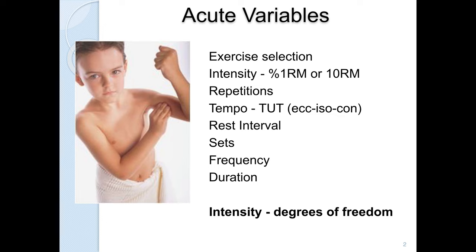The next acute variable is intensity — the amount of resistance you're using. There are two ways to write intensity: as a percentage of one rep max, or as a function of the 10 rep maximum. 10 RM means it's the amount of weight you should be able to do for 10 reps — no more. If you can do more than 10 reps, increase the weight. The idea is that doing an RM or a rep range means you want to fatigue by the end of the reps. If you do a 6 RM, fatigue by the 6th rep. That's probably the easiest way to write the intensity for clients — tell them to pick up a weight they can do for 10 reps, and if they can do more than 10, add weight.